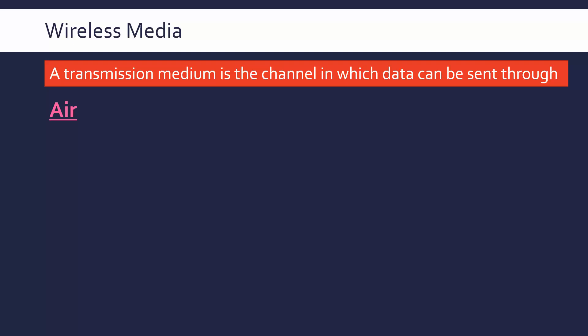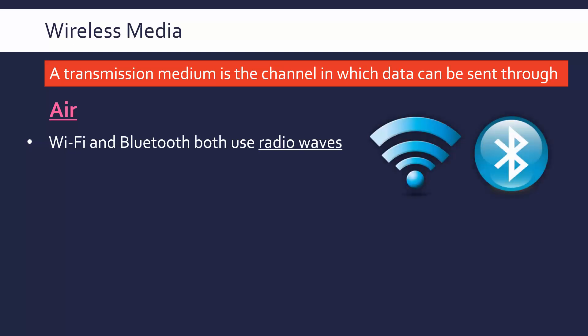To first look at air as a medium for communication — this is related to wireless communication, things going through the air, like Wi-Fi and Bluetooth. Both use radio waves to communicate. Wi-Fi and Bluetooth are specific standards, meaning they have a very specific set of rules and a defined set of frequencies used just for each of them.